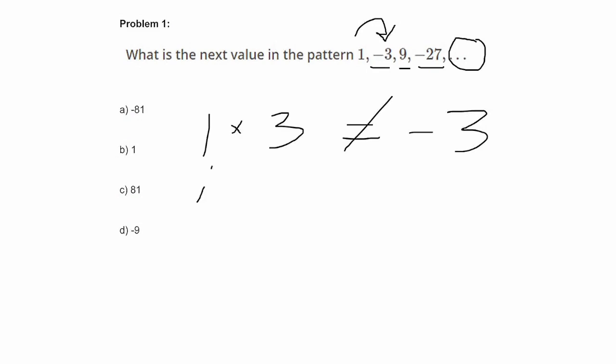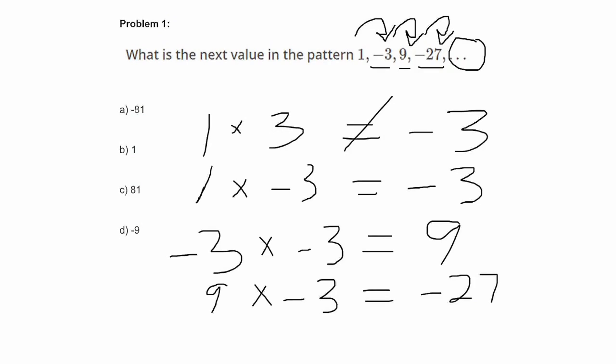Let's try 1 times negative 3. Yes, that gives us what we want, negative 3. So let's keep that pattern going and see if it works for the rest. From negative 3 to 9, negative 3 times negative 3 equals, yes, 9. That works because a negative times a negative equals a positive. Now from 9 to negative 27, 9 times negative 3 equals negative 27. It's continuing to work, so we know we are on the right track. Negative 27 times negative 3 is going to give us positive 81. Let's see if that's one of our choices. Yes, C is 81. So that is our answer.